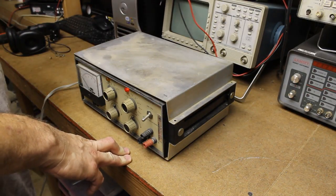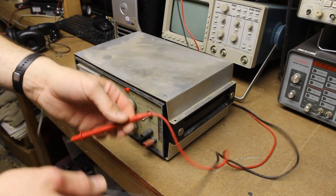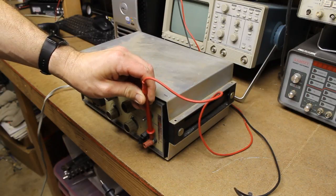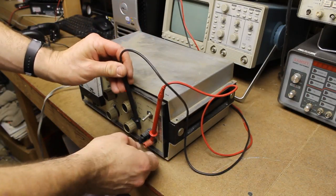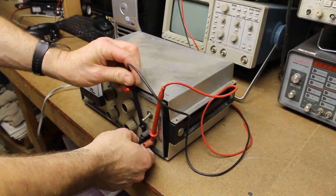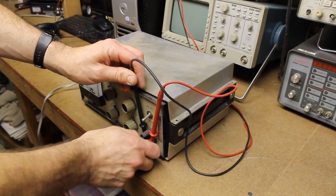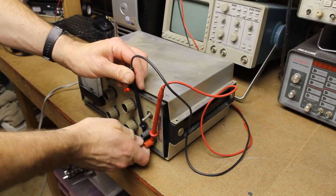I'm going to bring down the leads for my Fluke meter. We'll put positive on positive, negative on negative. I must already be reading something—yeah, a couple hundred millivolts.